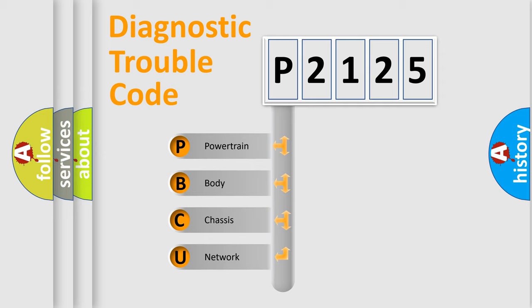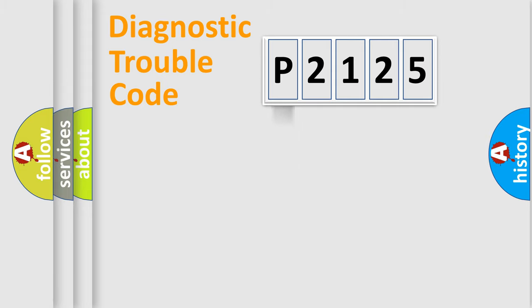We divide the electric system of automobile into four basic units: Powertrain, Body, Chassis, and Network.